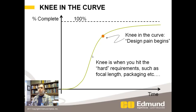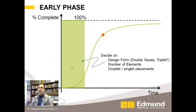Typically, that knee in the curve happens when you get the hard requirements such as focal length and packaging, and you don't have a lot of the manufacturing quite done yet. In the early design phase, you might spend your time just determining what the design form is — is it a double Gauss, is it a triplet, is it a TMA, how many elements are there, where are the doublets, where are the singlets placed. That takes place before this early knee in the curve.